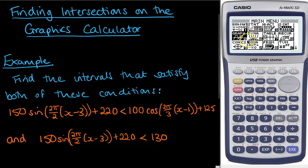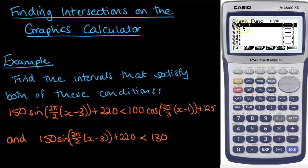On your graphics calculator, go to the graphing menu and we're going to put those functions in. So for y1, we want 150 sine of 2π over 2, and then we've got x minus 3, and a plus 220. So that's how you enter that. I'm just going to pause the video and enter the other ones.